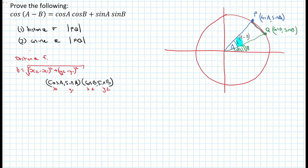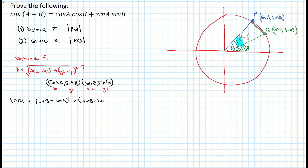I'm getting the distance between P and Q, so PQ is equal to the square root of: x2, which is cos B, minus x1, which is cos A, all squared, plus y2, which is sin B, minus y1, which is sin A, all squared. That is all within the square root.